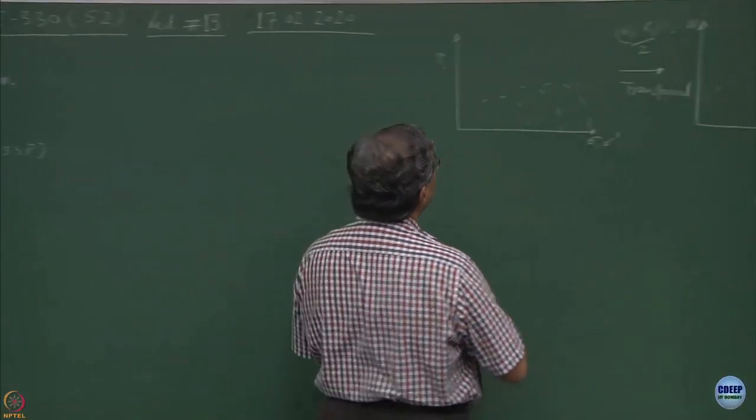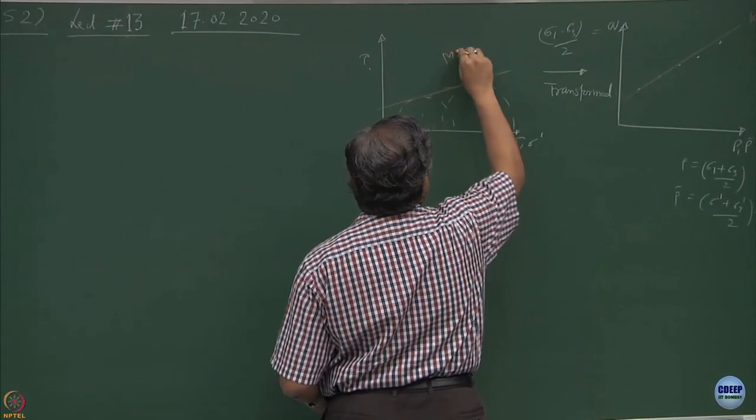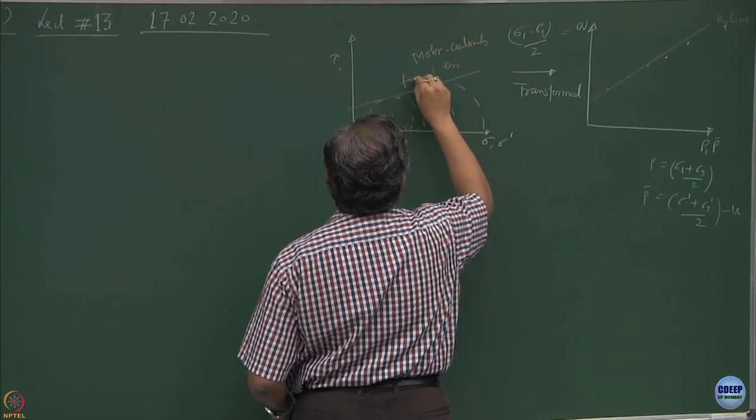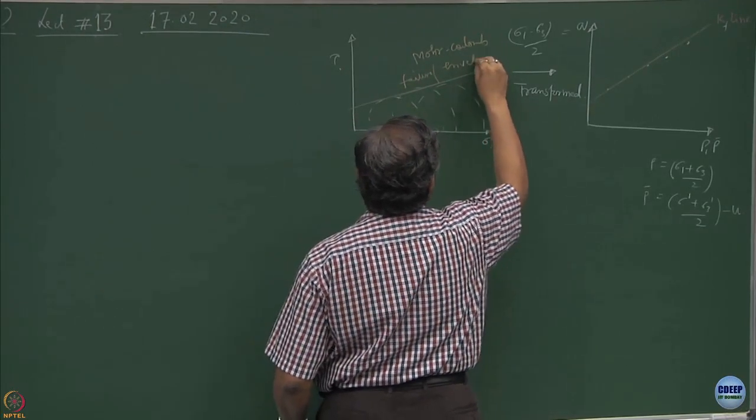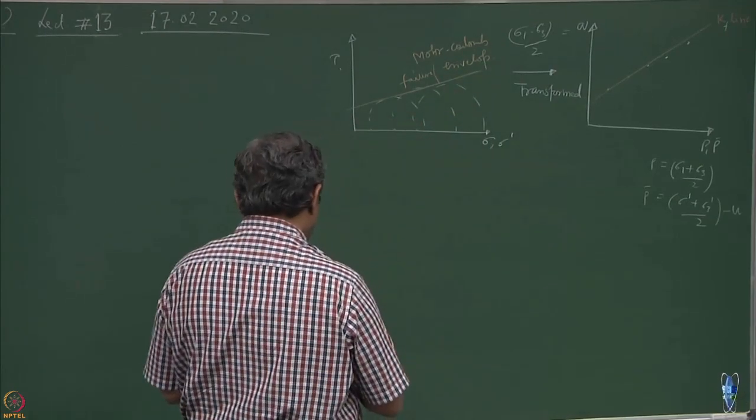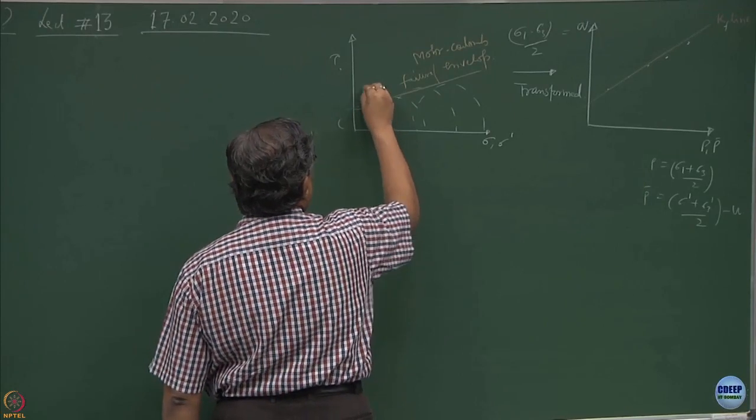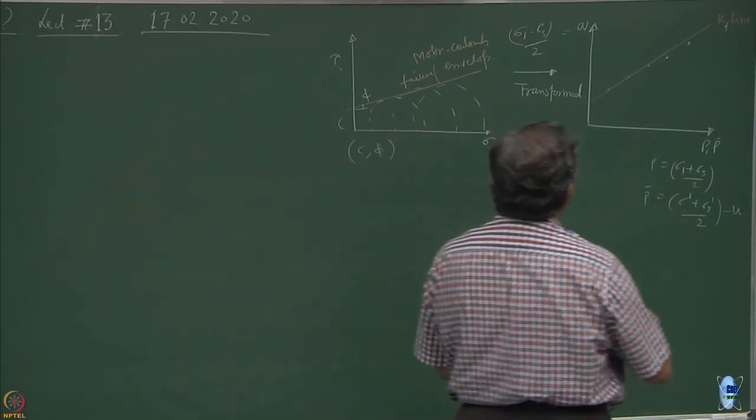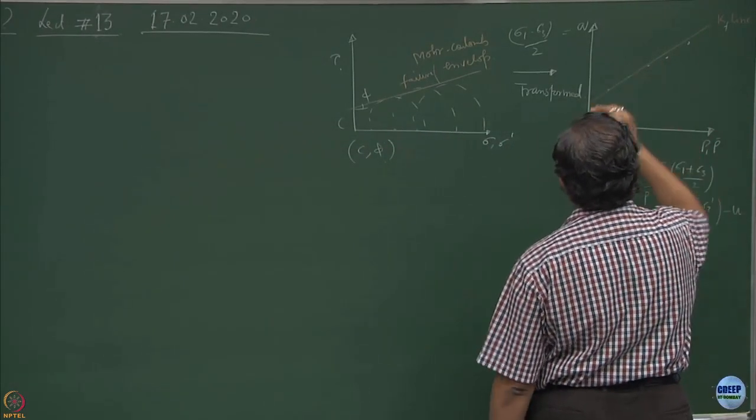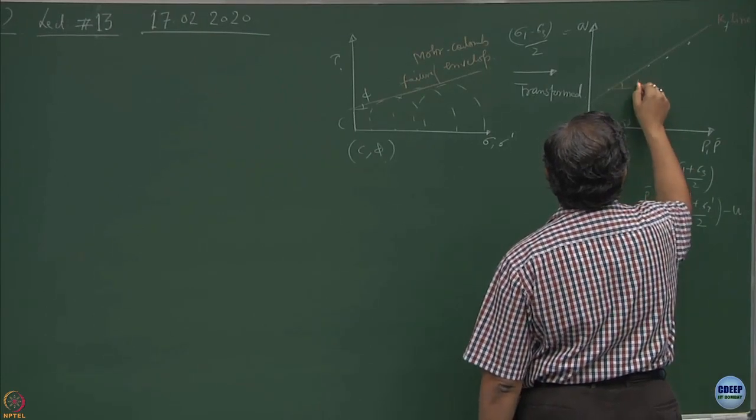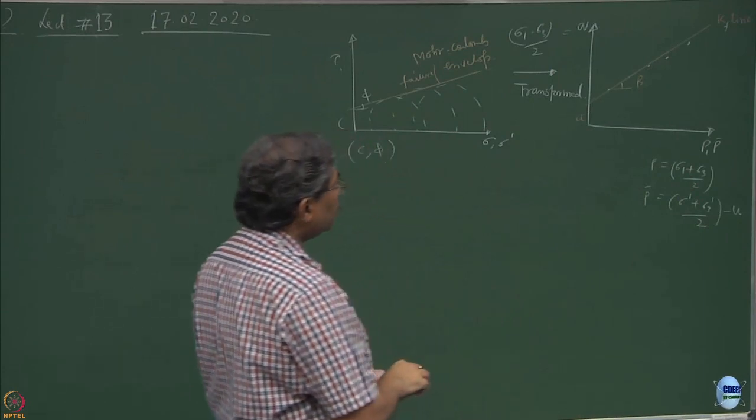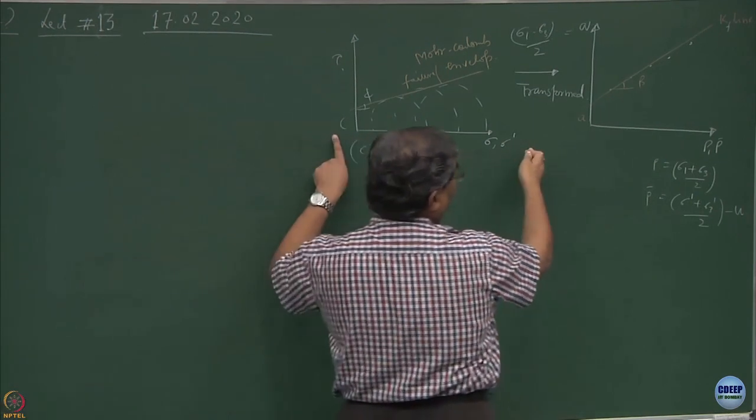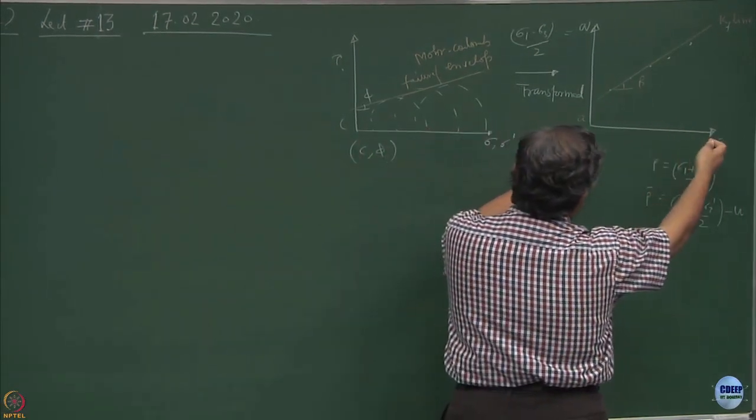On this plane we have the Mohr-Coulomb failure envelope where we have defined C and phi in general. Here we have transformed this to Q and P. If you remember, we have done something like A and beta. Now what I will do further is get rid of this type of plotting and deal with only PQ plane.